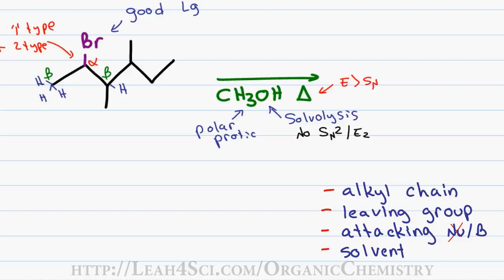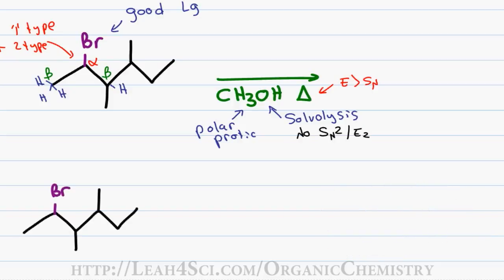Now that we know the E1 reaction can take place, let's see if we can come up with a product before we even start the mechanism. Since the elimination reaction involves the removal of a beta hydrogen and the formation of a pi bond between the alpha and beta carbon, let's identify the beta hydrogens and then determine where the new pi bonds can form.